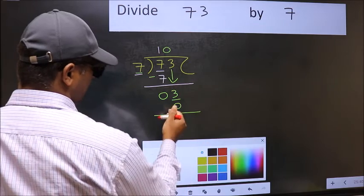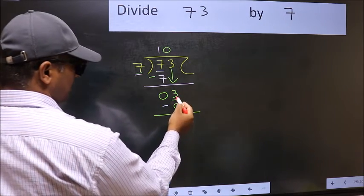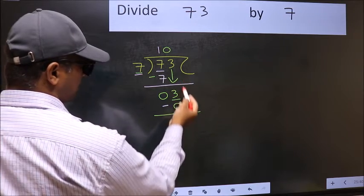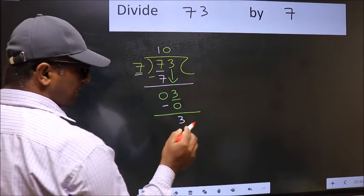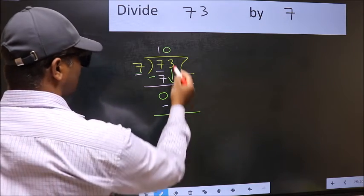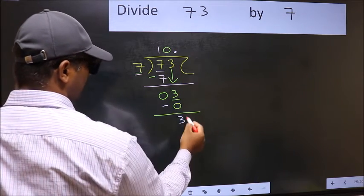Now subtract: 3 minus 0 equals 3. Over here, we did not bring any number down, and 3 is smaller than 7. So now you can put a dot and take 0.